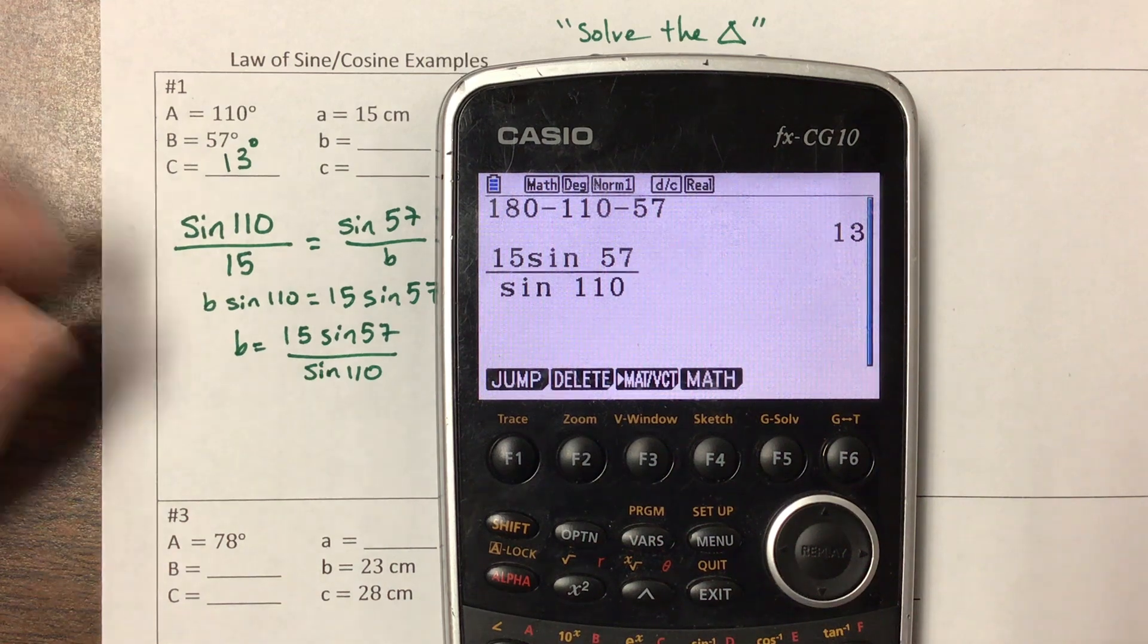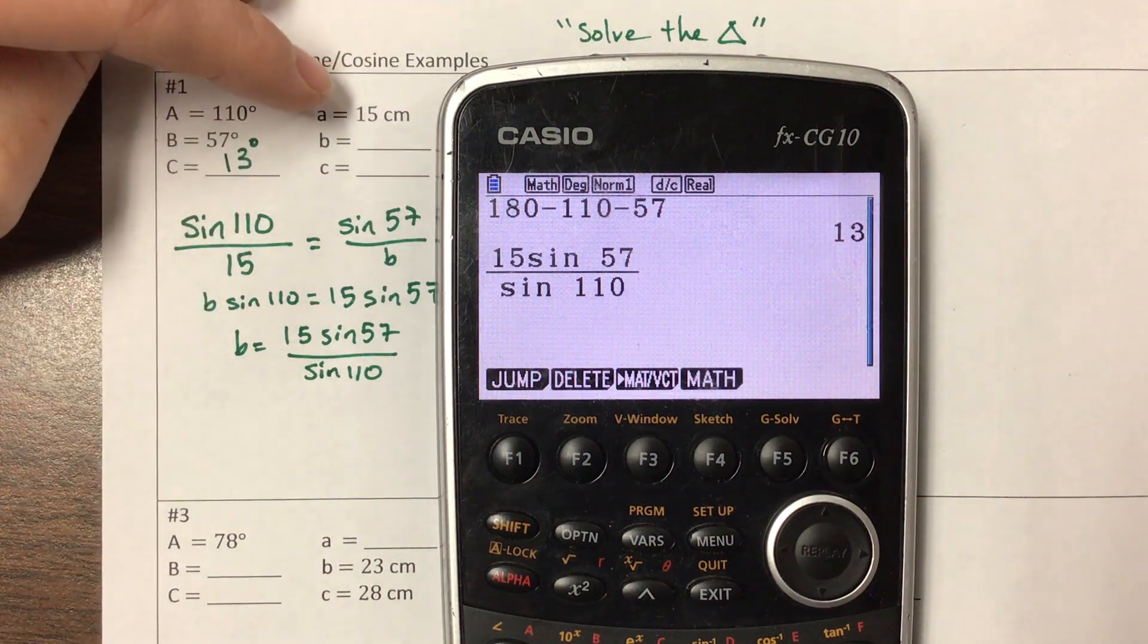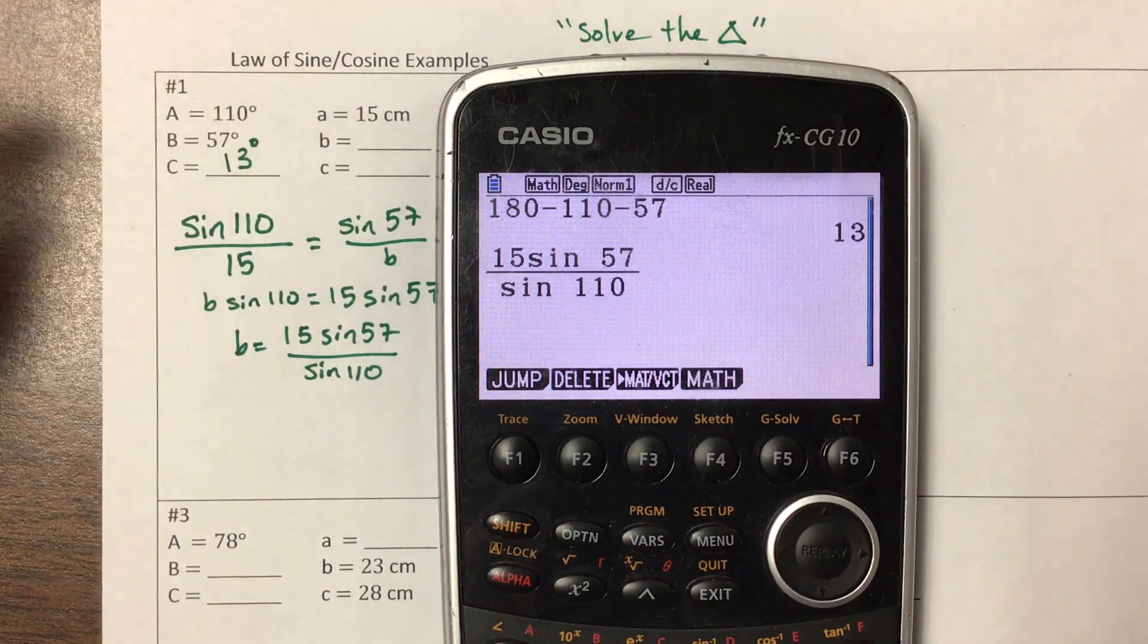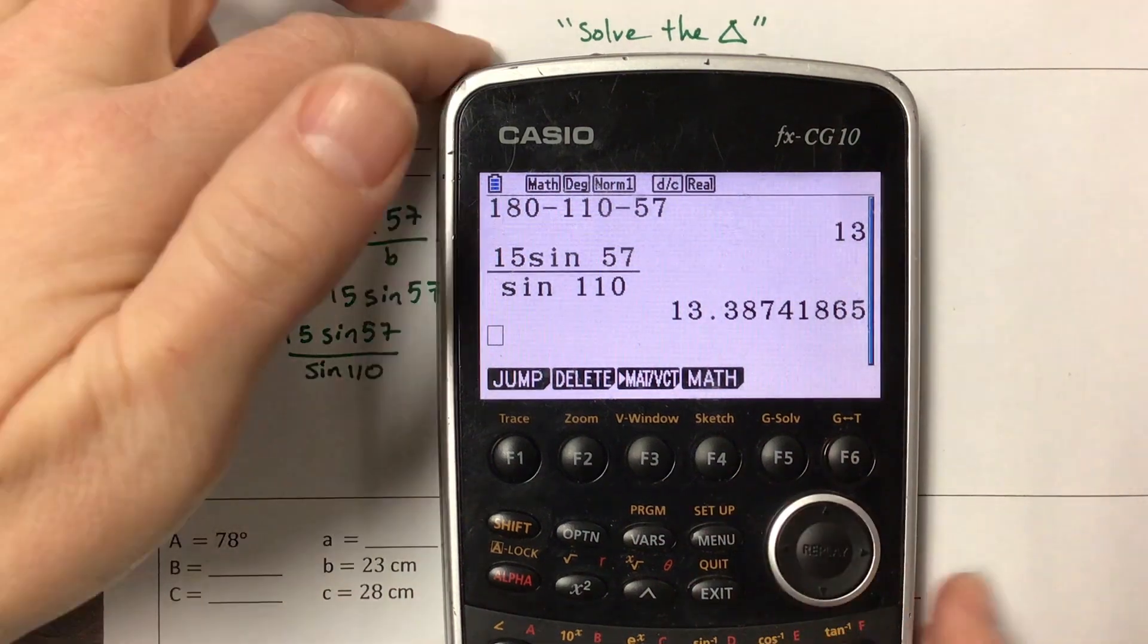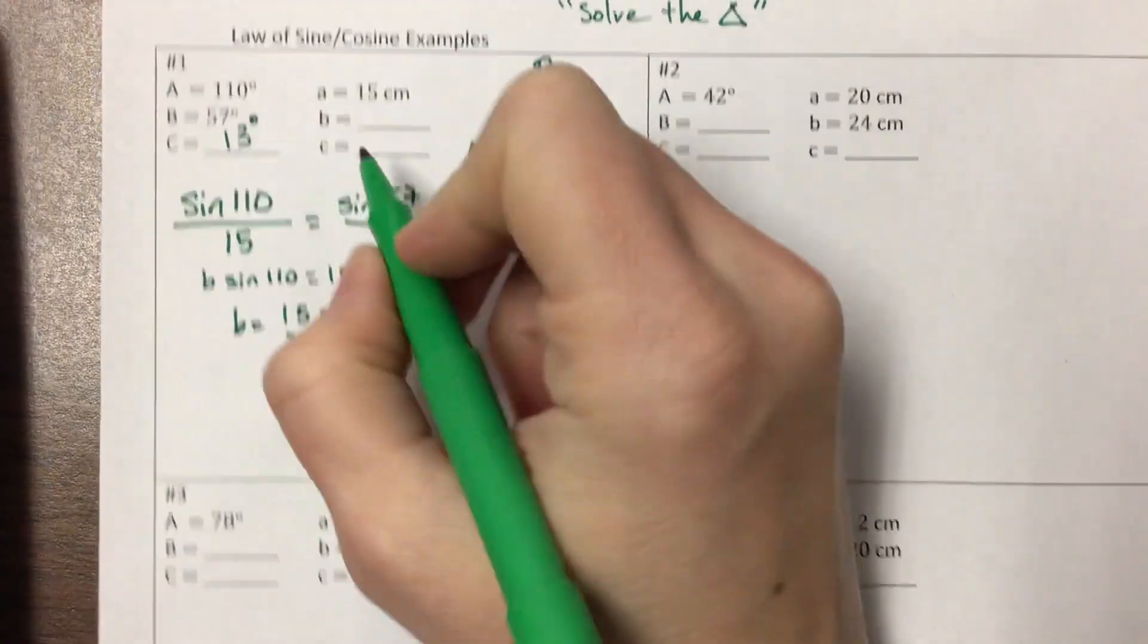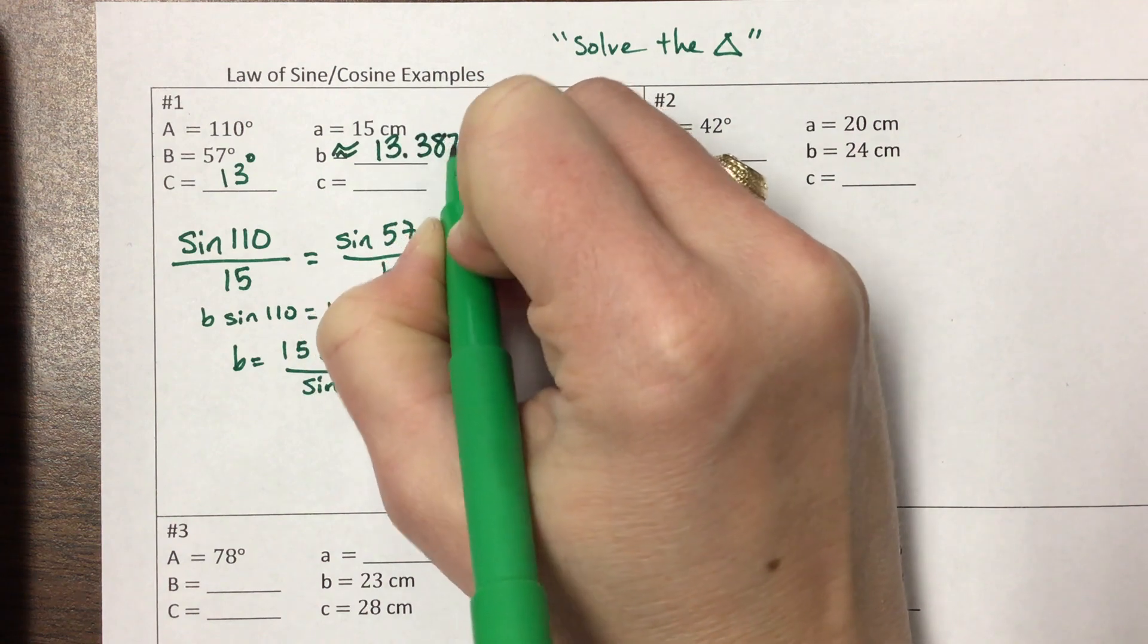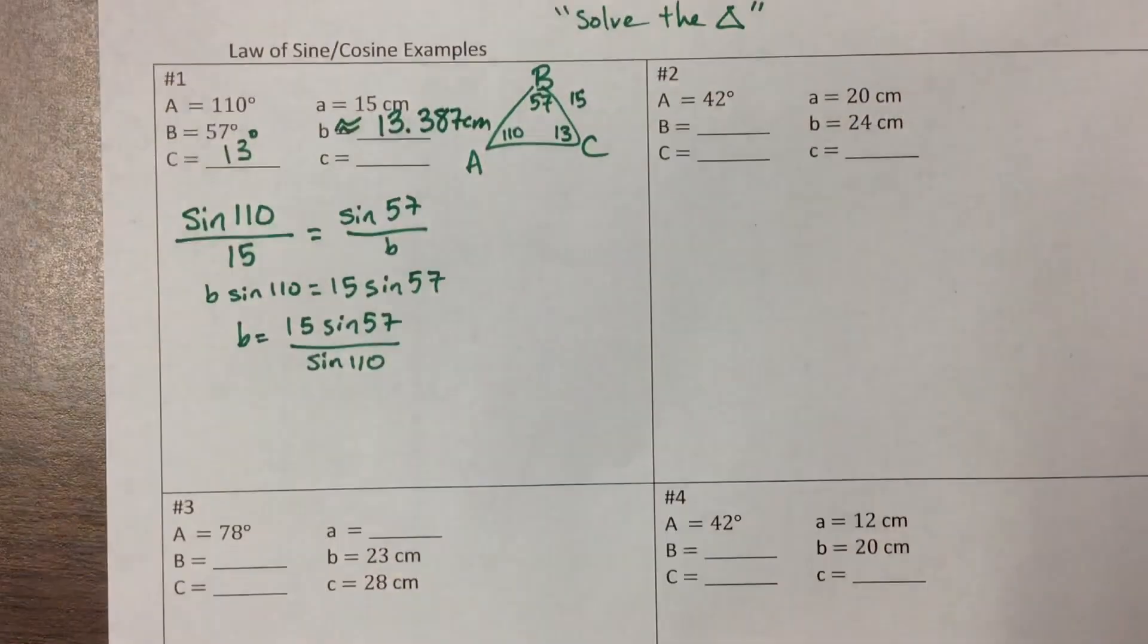I use my calculator to help me out. I'm going to make that fraction and say 15 sine of 57 all over sine of 110. And now I expect a side length that's not too far away from 15. Always check to make sure that your answers make sense. And if it doesn't, that's where I'd check to see if it's degrees or radians. So I'm already in degrees, I remembered to change that, and I have my first answer. Let's go ahead and give three decimal places. So B is approximately 13.387 centimeters.